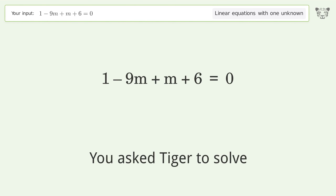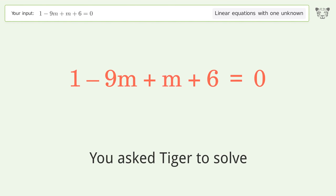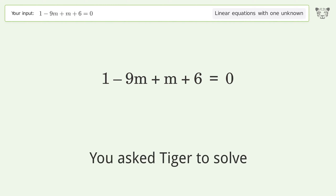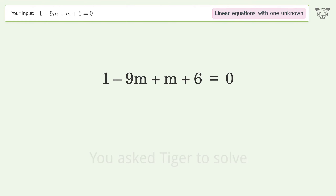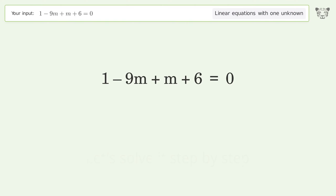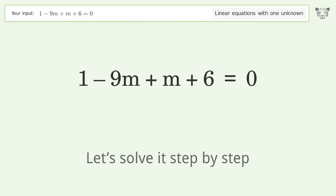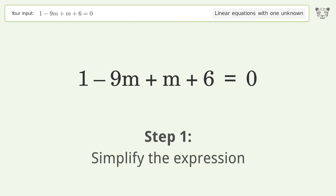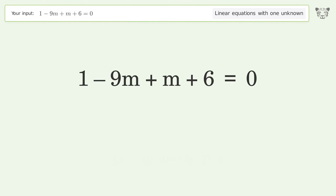You ask Tiger to solve this. It deals with linear equations with one unknown. The final result is m equals 7 over 8. Let's solve it step by step: simplify the expression and group like terms.